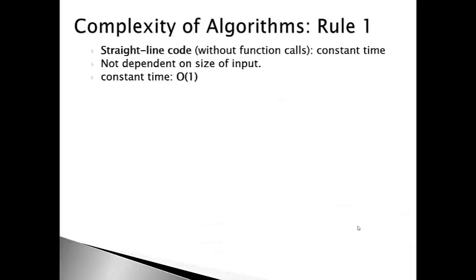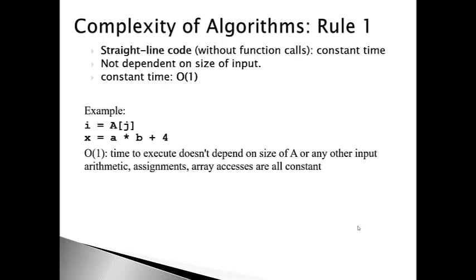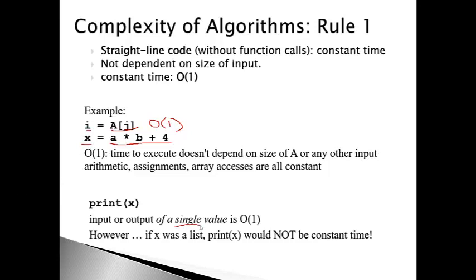The first rule pertains to straight line code — code without function calls. These operations are not dependent on the size of the input. Things like assignment to a particular variable, or accessing an individual item from a list and assigning it to a variable — these are constant time operations, denoted as O(1). Similarly, arithmetic expressions like a times b plus four, assigned to a variable, perform in constant time with no dependency on the size of the input.